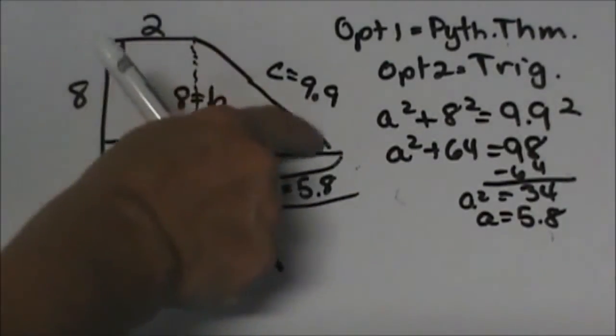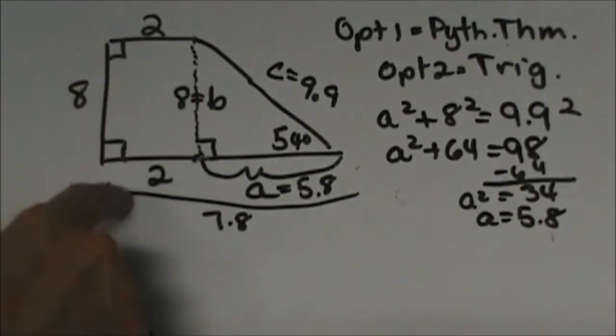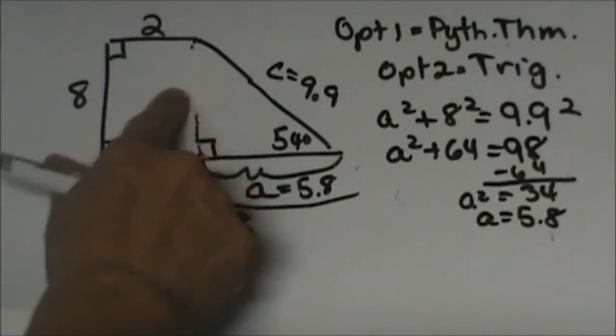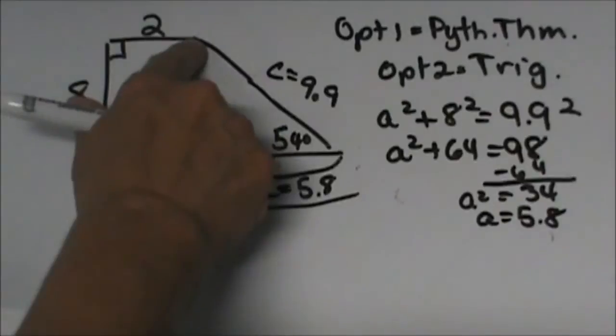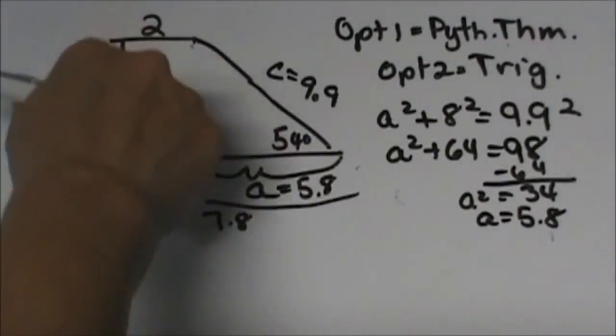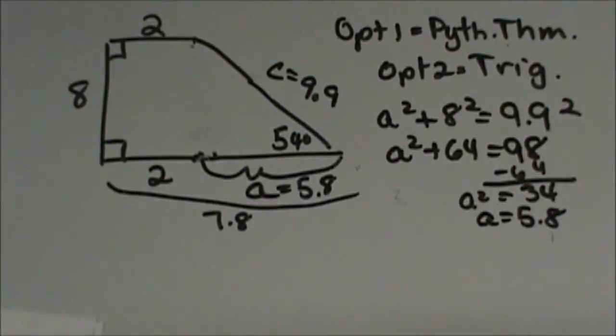I now know this side is 9.9, this side is 2, and this side is 8. I don't need that middle altitude. That's not part of the perimeter of the trapezoid.